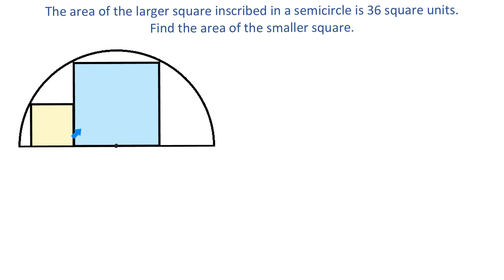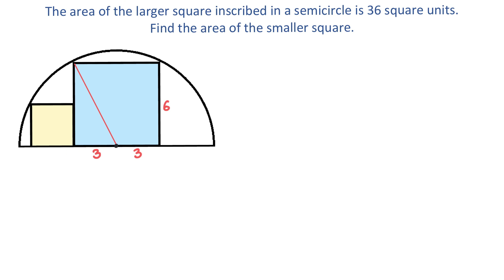If the area of this square is 36 square units, then each side is equal to 6 units. Down here, half of a side is 3 units and another half is another 3 units. If we connect these two points we will get a right triangle whose hypotenuse is also the radius of this circle. Because in this right triangle one side is 6 units and the other is 3 units, we can use the Pythagorean theorem to find the hypotenuse.